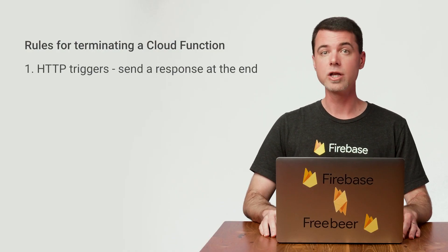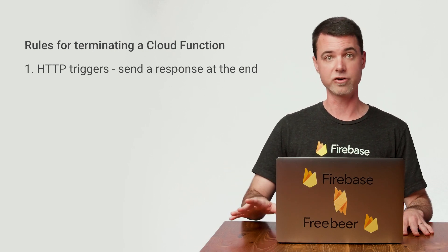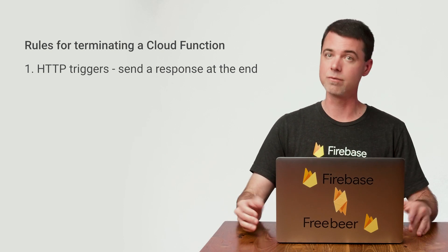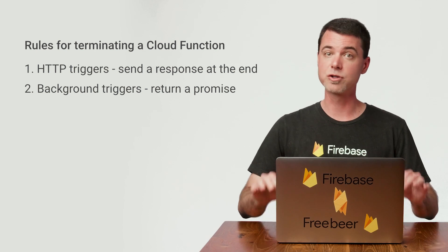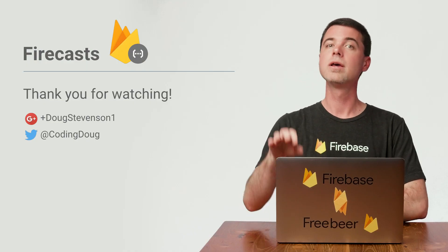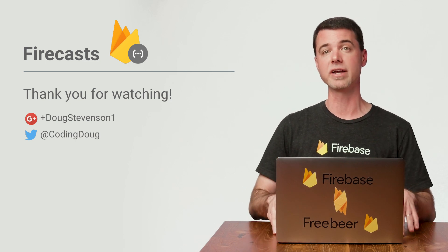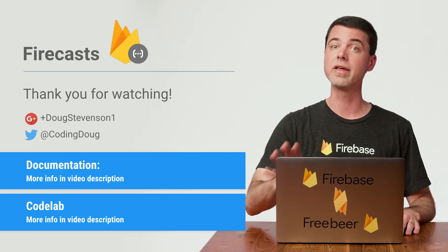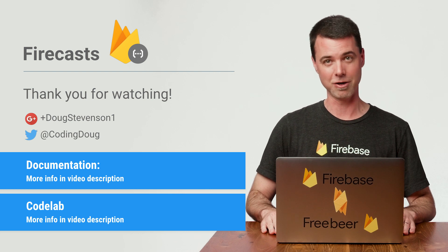Now you know the basics of using promises in your HTTP functions. Nearly all your functions will use promises in some way. Let's review those two rules for terminating your functions. First, for HTTP type triggers, you have to send a response to the client as the very last action you take in your function, for all code paths in that function. And that's what we did today with the help of promises. Second, for all other types of triggers, you have to return a promise from the function that becomes fulfilled or rejected when the work is complete. And that's what I'll show you next time. For those of you who know TypeScript pretty well, async/await to deal with promises is coming in a few videos later in this series. I personally think it's important to master normal promises first. So be sure to subscribe to the Firebase channel on YouTube to get notified of the next video, or follow us on Twitter at Firebase. Until then, be sure to read the documentation and other helpful links in the description below. I'll see you next time.